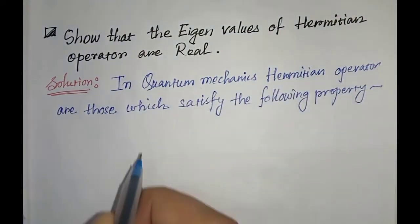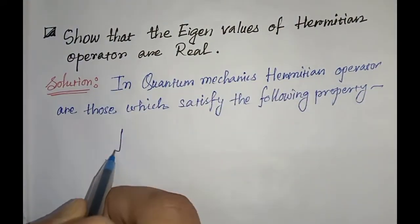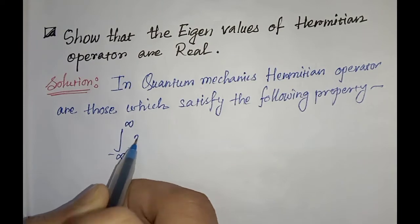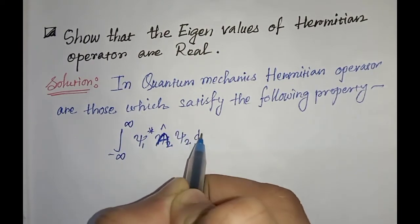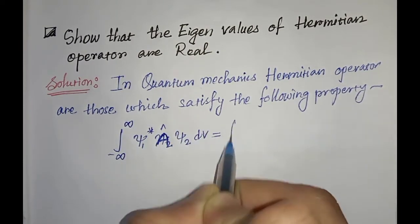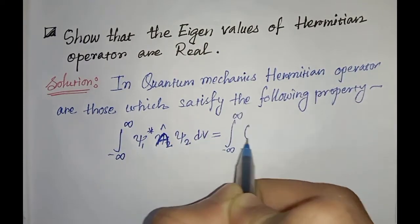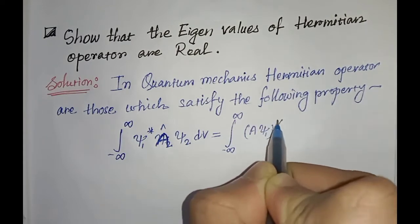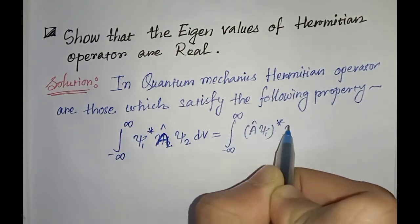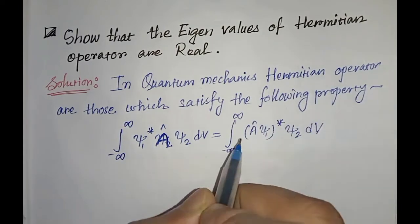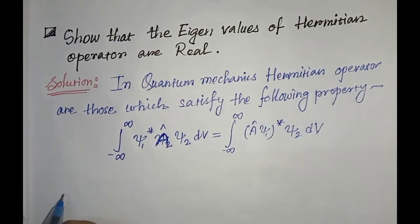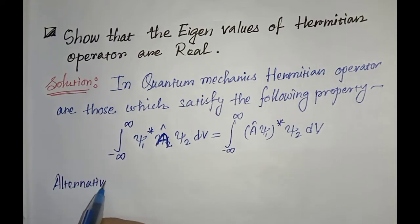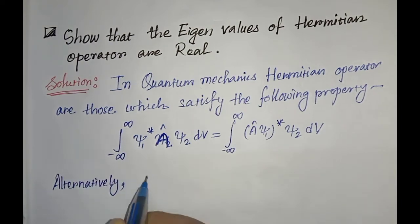The property is: the integration from minus infinity to plus infinity of ψ₁* A ψ₂ dV equals the integration from minus infinity to infinity of (Aψ₁)* ψ₂ dV.